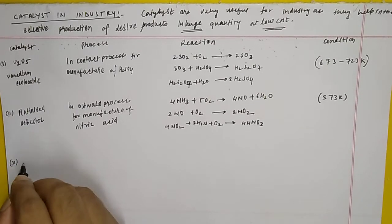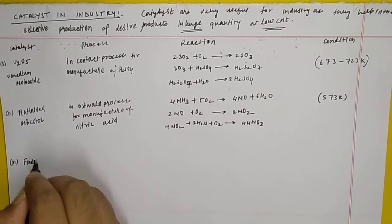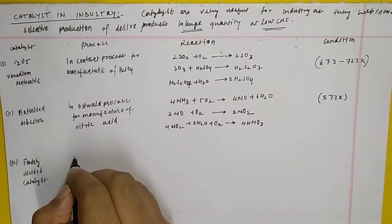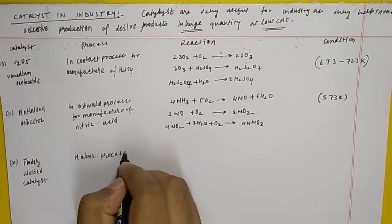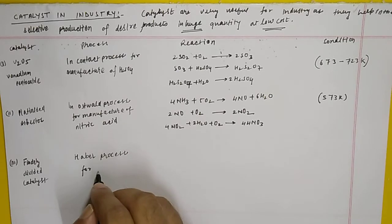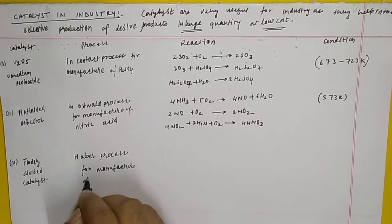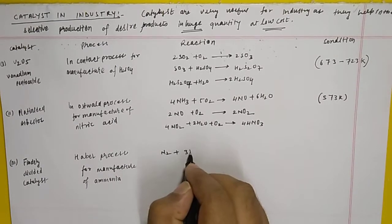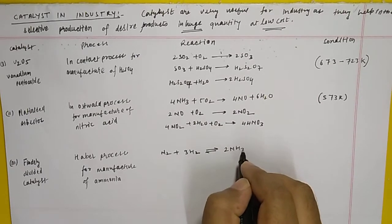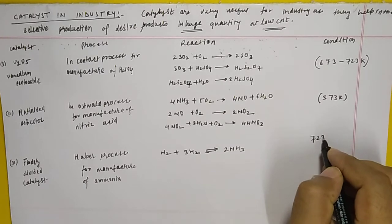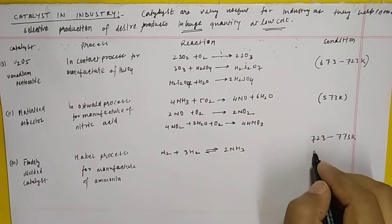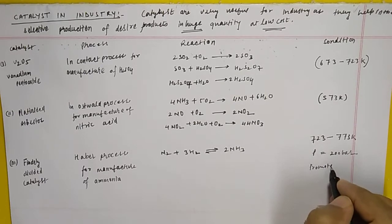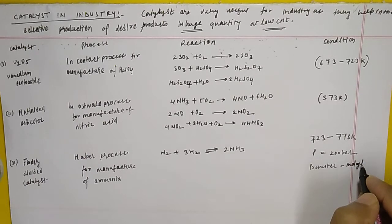The third catalyst is finely divided iron, used in the Haber Process for the manufacture of ammonia. The reaction is: N₂ + 3H₂ ⇌ 2NH₃. The temperature to maintain is 723 to 773 Kelvin, pressure is 200 bar, and the promoter used to activate the iron catalyst is molybdenum.